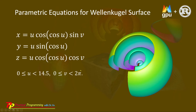Usually, in order to see the inside of the surface, we take v values less than 2pi. Here you can see we have the cut. This means we use 0 to 5, which is less than 2pi, so you can see the inside of this surface.